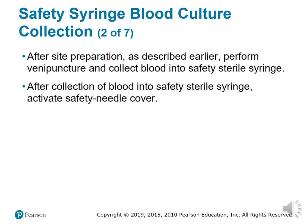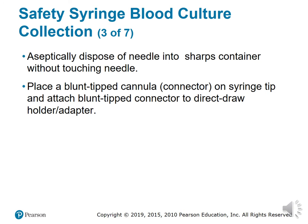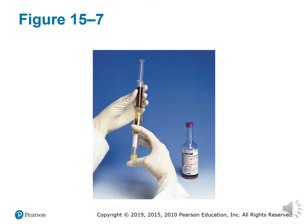After collecting blood into the safety syringe, activate the safety needle cover, dispose of the needle into the sharps container without touching the needle, place a blunt-tip cannula or connector on the syringe, and attach the blunt-tip connector to a direct draw holder adapter.